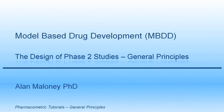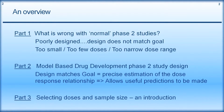This tutorial is entitled Design of Phase II Studies: General Principles. This presentation will be split into three parts. First, what is wrong with normal Phase II studies - how they're poorly designed, the design does not match the goal, they're typically too small, have too few doses, and too narrow a dose range. In part two, we'll discuss model-based drug development Phase II study design, where the design matches the goal of precisely estimating the dose-response relationship to allow useful predictions. In part three, we'll introduce selecting doses and sample size.